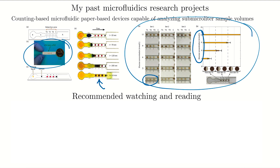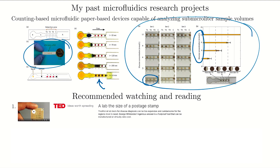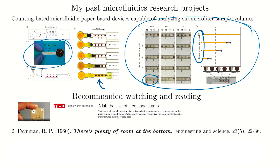For my course at Ontario Tech I assign papers and videos for students to discuss. I'd strongly recommend you read or watch the following: first, a TED talk by George Whitesides on a lab the size of a postage stamp — I'll link to it in the description. Second, a paper by Richard Feynman called 'There's Plenty of Room at the Bottom' from 1960 — it's fascinating to see his early predictions about exploring smaller scales, and it's not overly technical; he's a great and funny presenter. Third, a paper by Purcell from 1977 on 'Life at Low Reynolds Numbers,' discussing how organisms move and behave in small-scale flows.